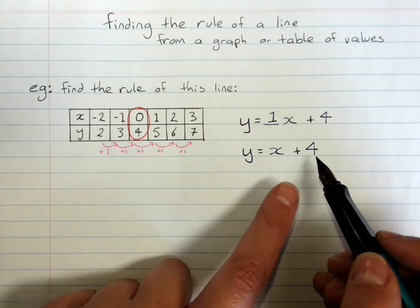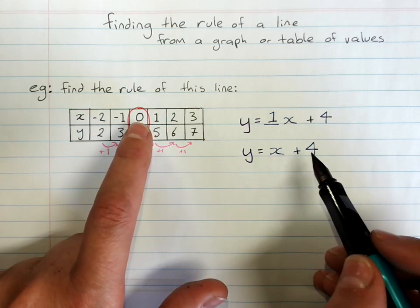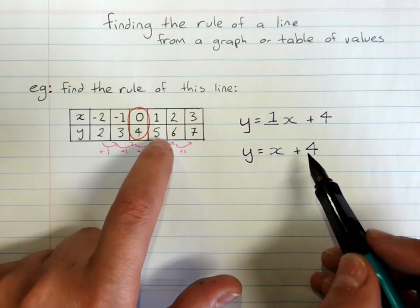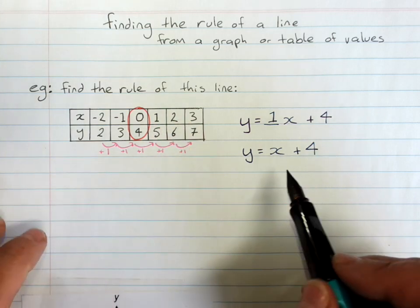And if you wanted to be sure you've got it right, you could check. Zero plus four is four. One plus four is five. Two plus four is six. Three plus four is seven. You got it right.